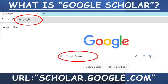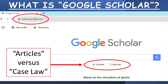Google Scholar is a separate search engine from regular Google search, but both are free. To access Google Scholar, you can go to google.com and search for Google Scholar, or you can directly visit the scholar.google.com website. Once you're on Google Scholar, you'll see a search bar with buttons for articles and case law. Articles contain academic research studies on millions of topics. For our purposes, click on case law.